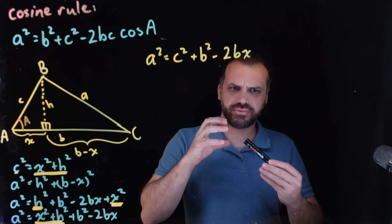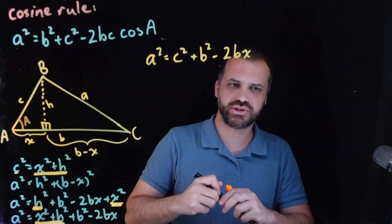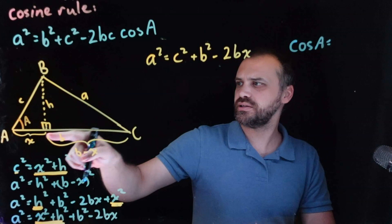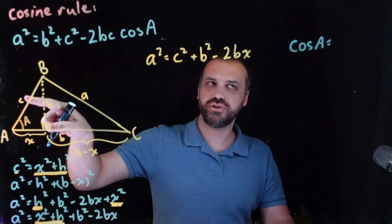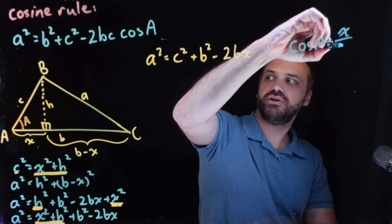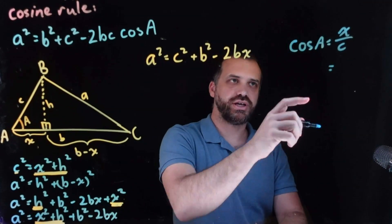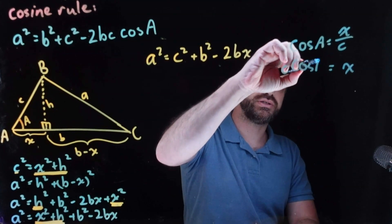Let's look at trig ratios. Cos of A, so let's do that in a different color because this is just kind of an important piece here. Cos of A is equal to adjacent over hypotenuse. X over C. I can rearrange that. I can rearrange it to say that X equals C cos A.